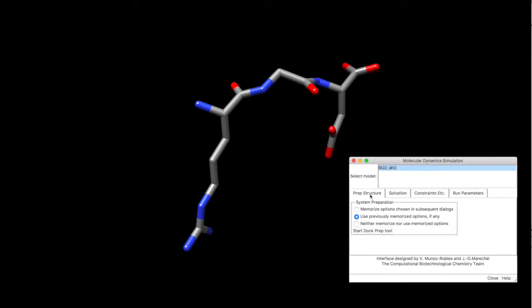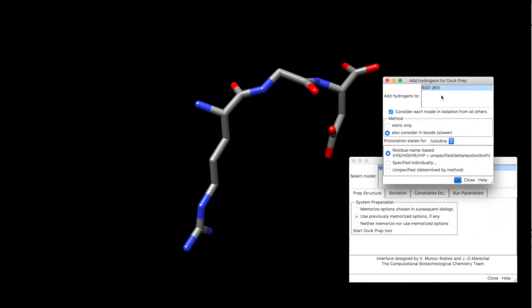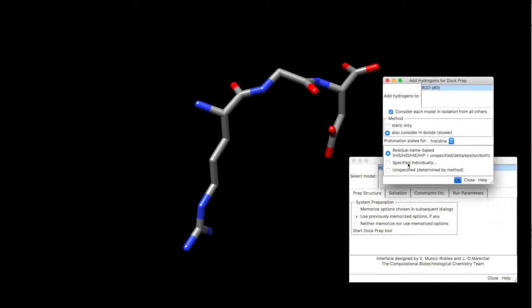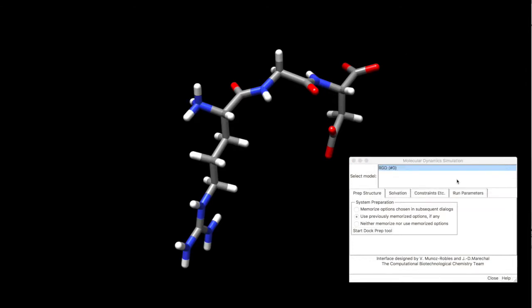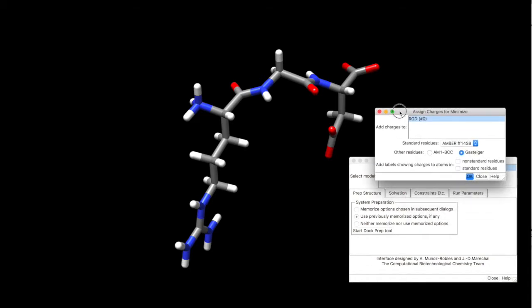First we have to prep our structure, so we click on start docking prep tool, this will add hydrogens and charges to our atoms, click ok, ok, protons are added.